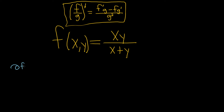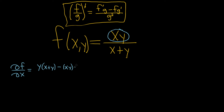Let's find ∂f/∂x, the partial derivative of our function with respect to x. Whenever you're finding this, you treat all other variables as constants, so all of the y's are constants. The derivative of the top with respect to x: since y is a constant, the derivative of x is 1, so we're left with y. That's the derivative of the top times the bottom, minus the top xy, times the derivative of the bottom — the derivative of x is 1 and the derivative of y is 0 — all over (x + y) squared.